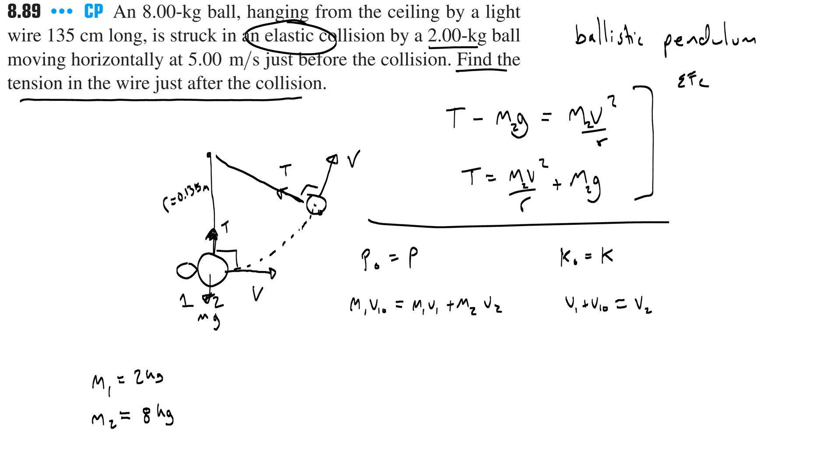All right, now ideally what we want to do is we want to find v2. We want to find the final velocity of the hanging ball, because if we can do that, we can plug it into our equation to figure out the tension. So to do that, I'm just going to go ahead and do this substitution. I'm going to plug in v1, because by doing that, I'm eliminating it, and therefore my answer will be in terms of v2, and I can solve for v2 and get the velocity that I need. So let's do that. This becomes m1 v2 minus v1,0 plus m2 v2 equals m1 v1,0. I'm going to factor this: m1 v2 minus m1 v1,0 plus m2 v2 equals m1 v1,0.